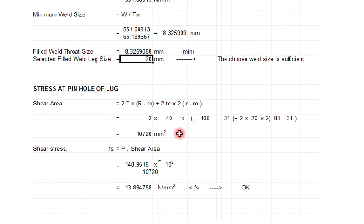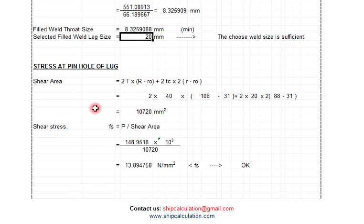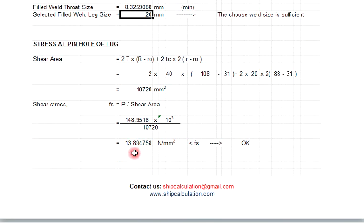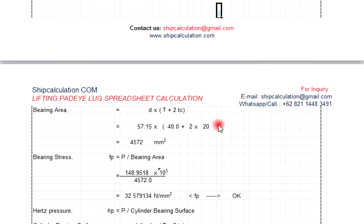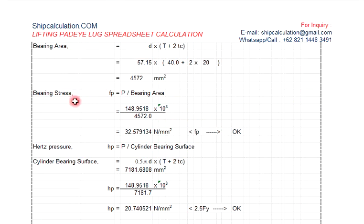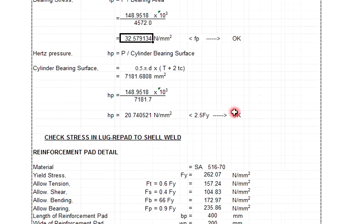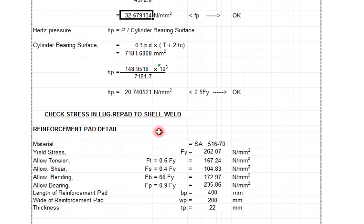Stress at pin hole of lug—I have to double check the shear area and stress. The shear stress is only 13.89 N/mm², which is less than the allowable shear stress, so this is okay. We also have to check the bearing stress. The bearing stress is also less than the allowable bearing stress, indicating only 32.5 N/mm², so it's okay.